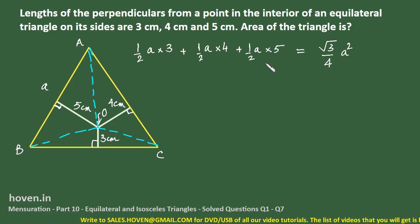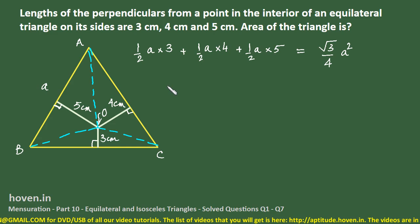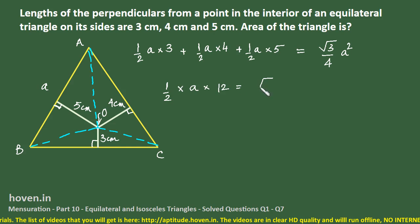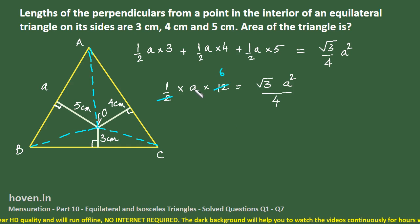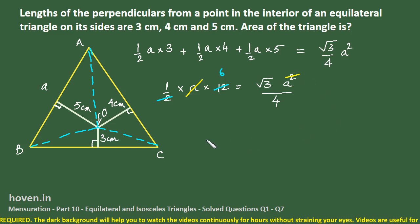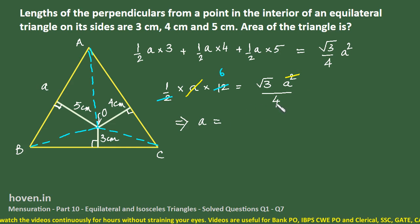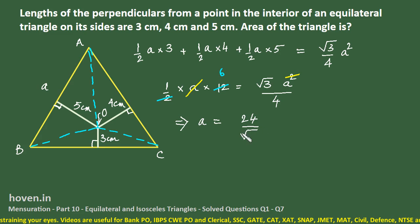Taking (1/2 × a) common on the left side: (1/2) × a × (3 + 4 + 5) = (1/2) × a × 12 = (√3/4) × a². We can cancel the 2 with the 6, and also cancel one factor of a from both sides.